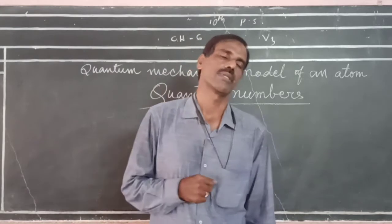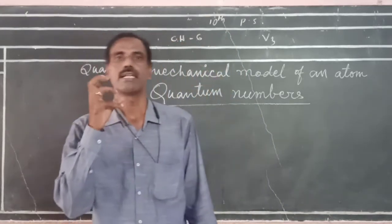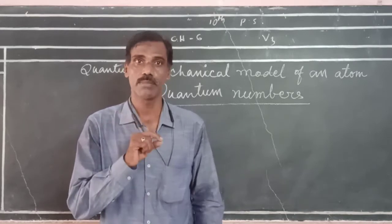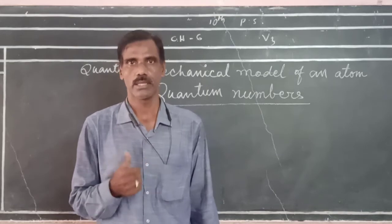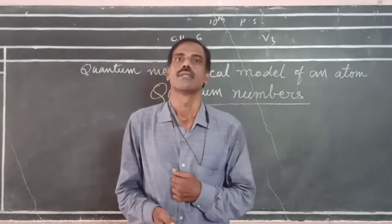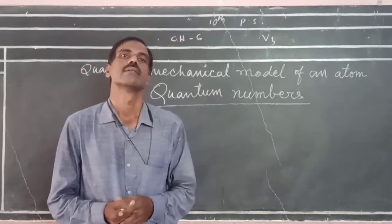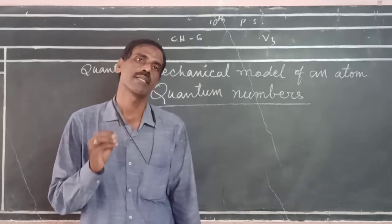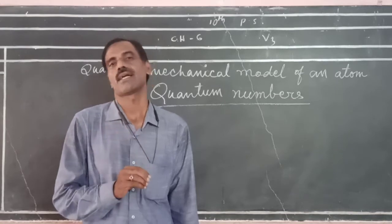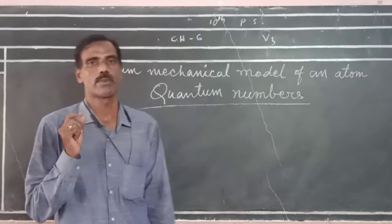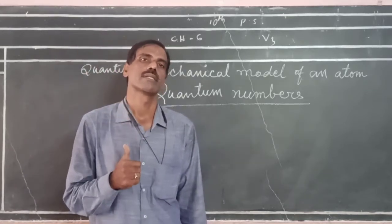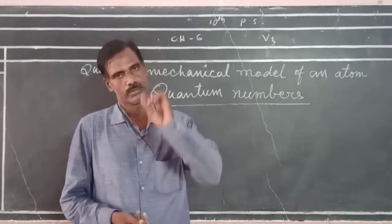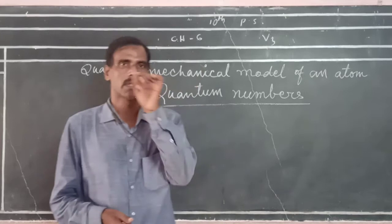A particular region of space around the nucleus where the probability of finding electrons is high is known as an orbital. In this model, we discuss orbitals — the space around the nucleus where the probability of finding electrons is more. Here I would like to differentiate orbit and orbital.